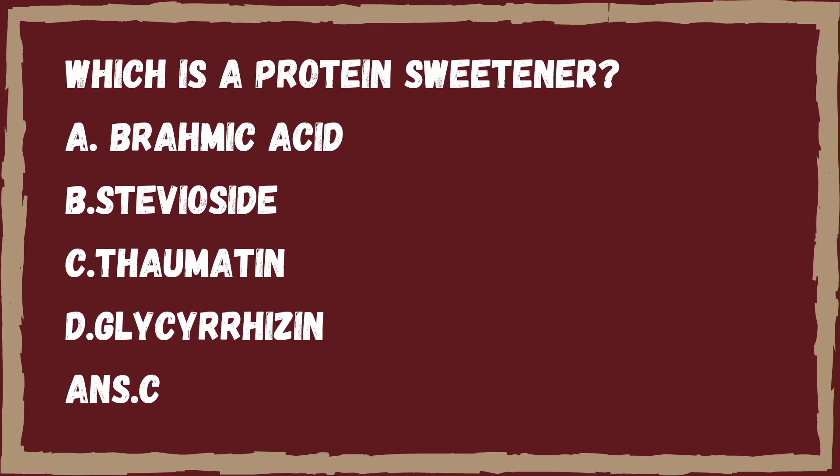Next question: which is a protein sweetener? Option A, gramic acid. Option B, steviocyte. Option C, thaumatin. Option D, glycyrrhizin.